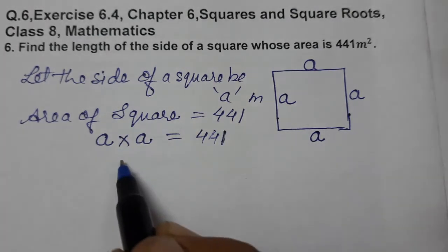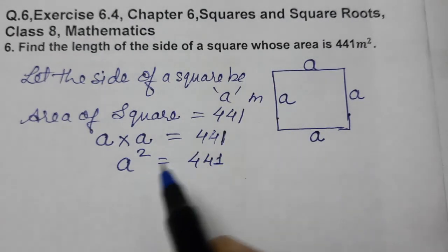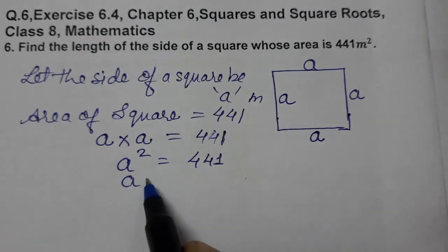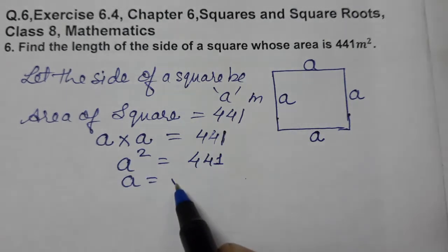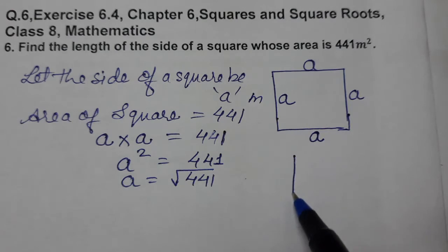a into a equals a squared. a squared equals 441, means we are going to take the square root of 441.